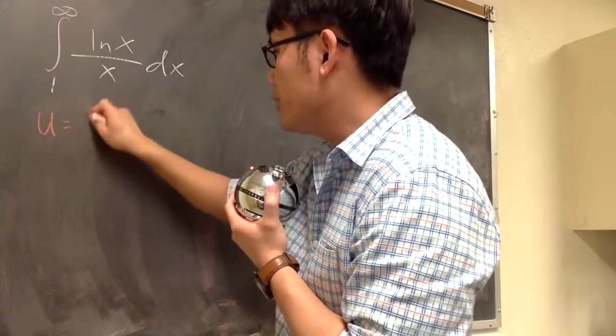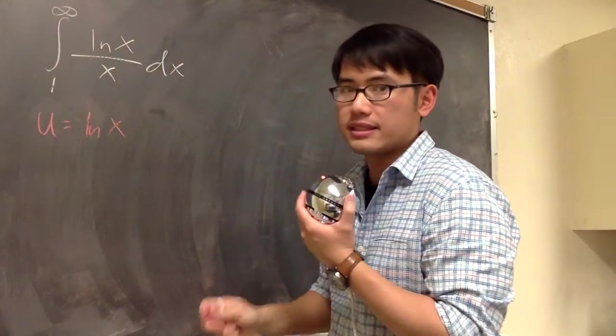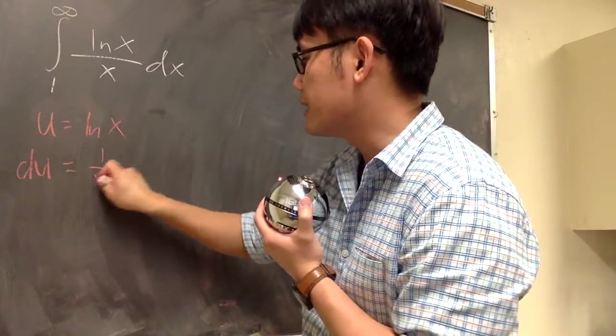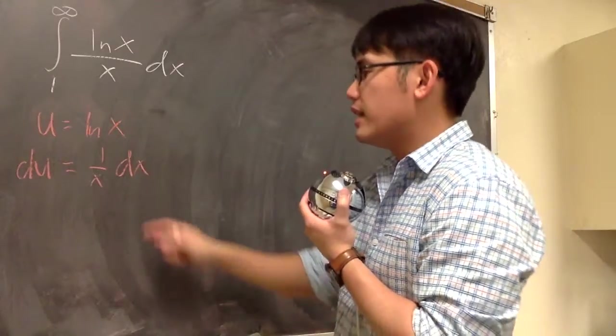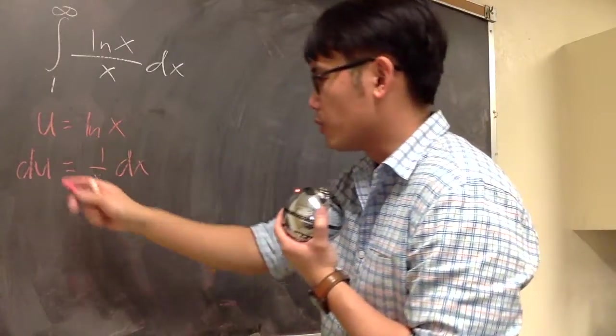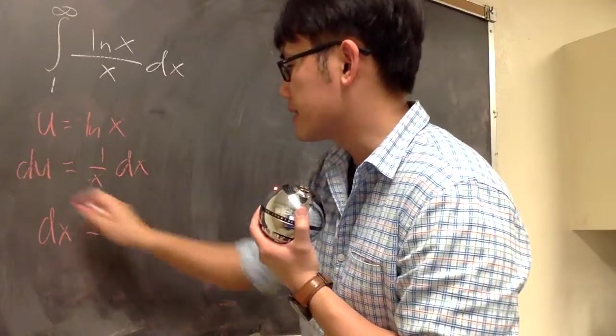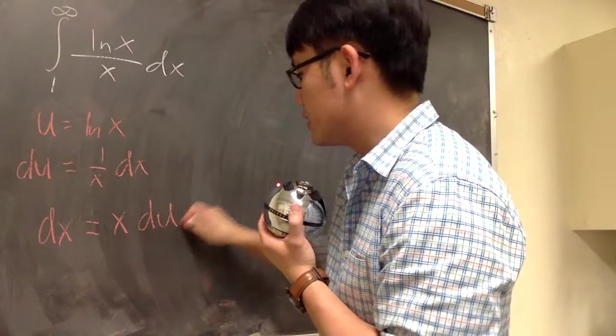Let's differentiate both sides. du will be the derivative of ln x, which is 1 over x dx. I want to solve for dx, so multiply both sides by x. I will have dx equals to x times du.